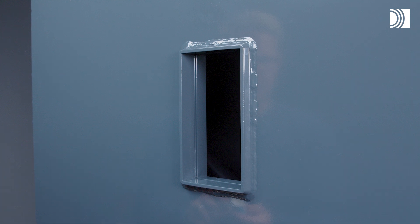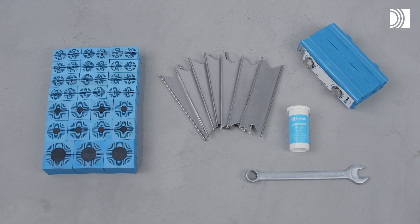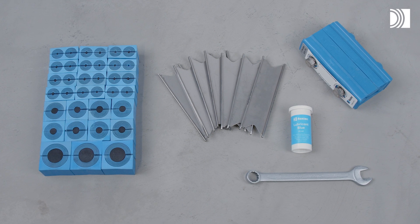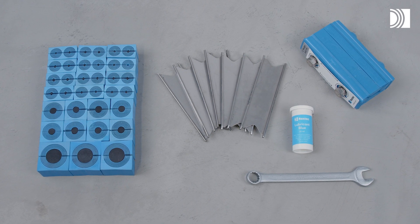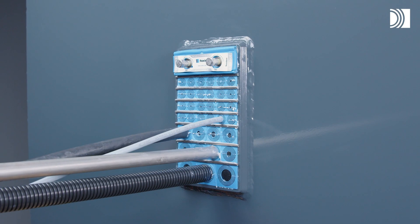You need the Roxtec CLW Frame, Roxtec CM Sealing Modules, Roxtec C Stay Plates, the Roxtec C Wedge and Roxtec Lubricant Blue, as well as welding equipment and a spanner. With the Roxtec CLWK Transit,